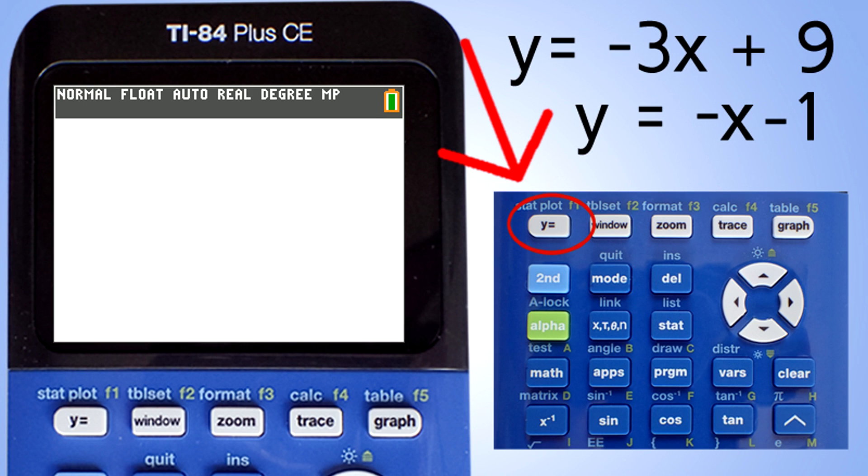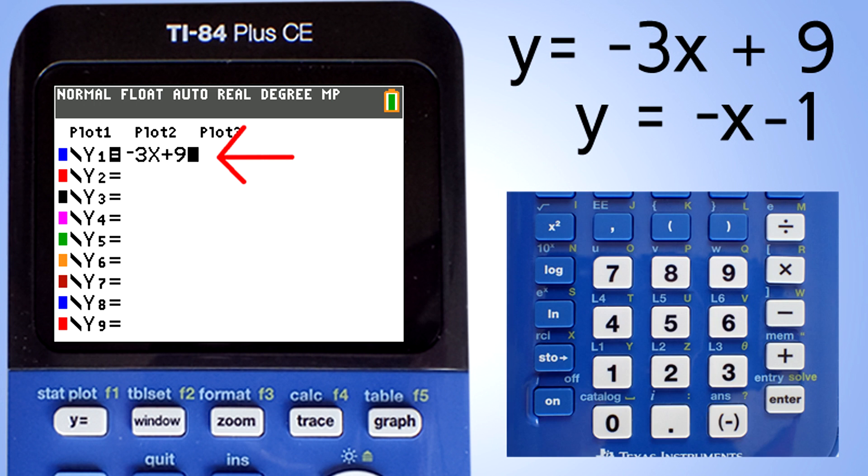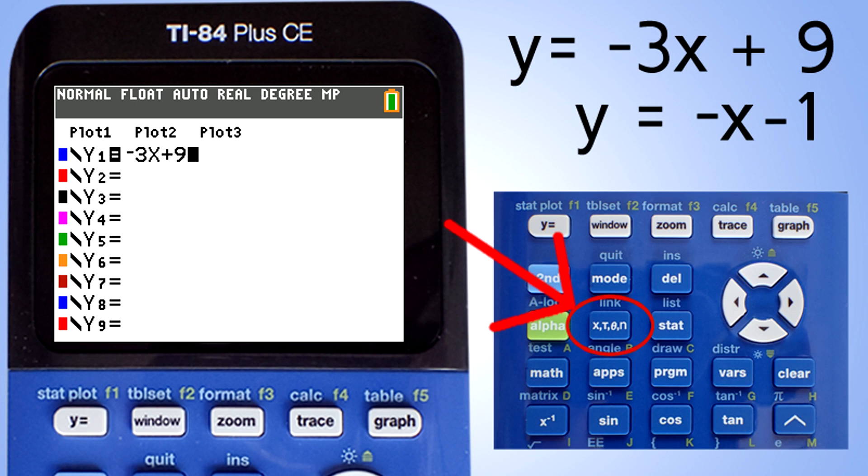On the calculator, press this y equals button. This screen appears. Type in the first equation, negative 3x plus 9. Remember to use the negative sign here for the negative 3 and not the minus sign or you will get an error message later. Also, the x is located here.